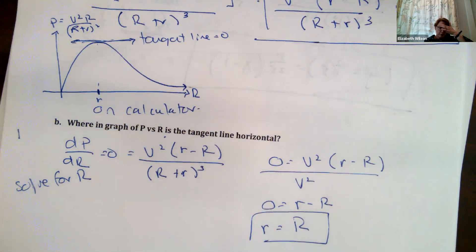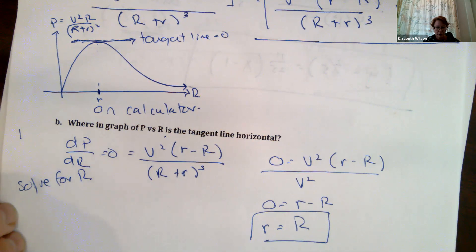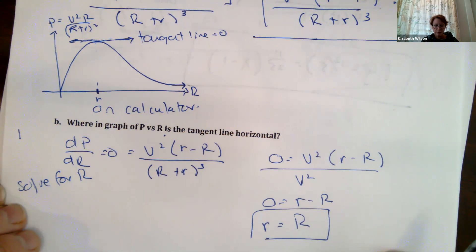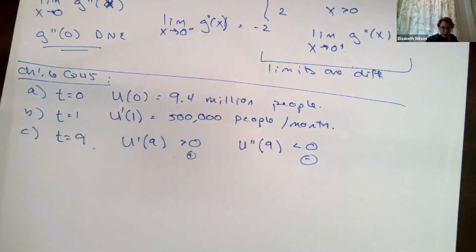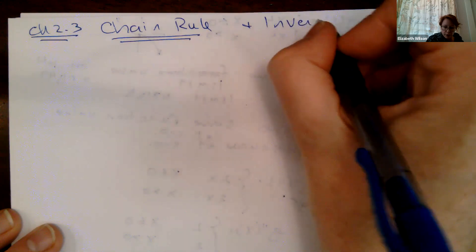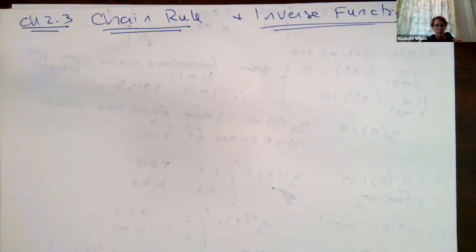Now chapter 2.3. Today we'll talk about the chain rule, and on Monday we'll finish with the chain rule and then cover inverse functions — there's always a question on the midterm or final about inverse functions. The chain rule comes into play with composite functions: a function composed of another function, like cosine(x³) where x³ is the inner function g(x) and cosine is the outer function f. We could also have something like √(x⁴ + 1).